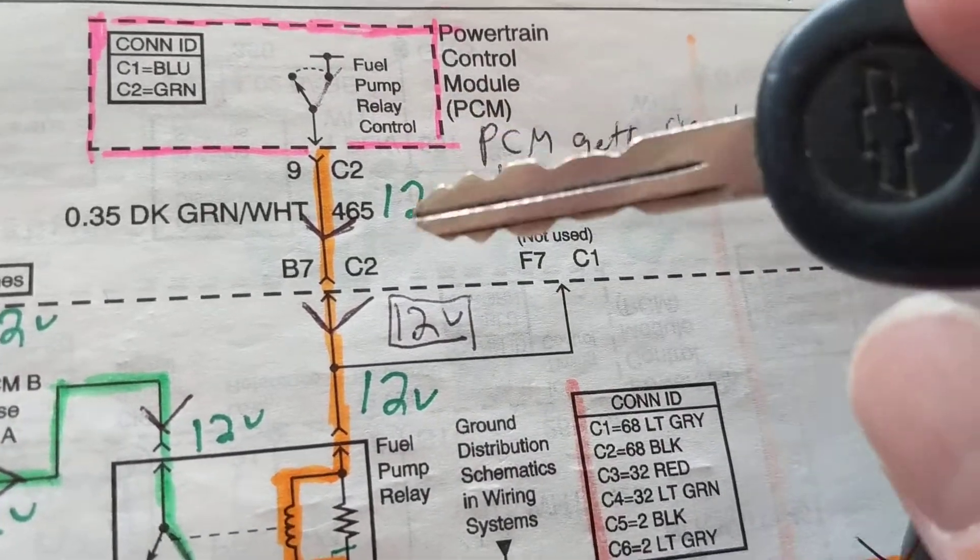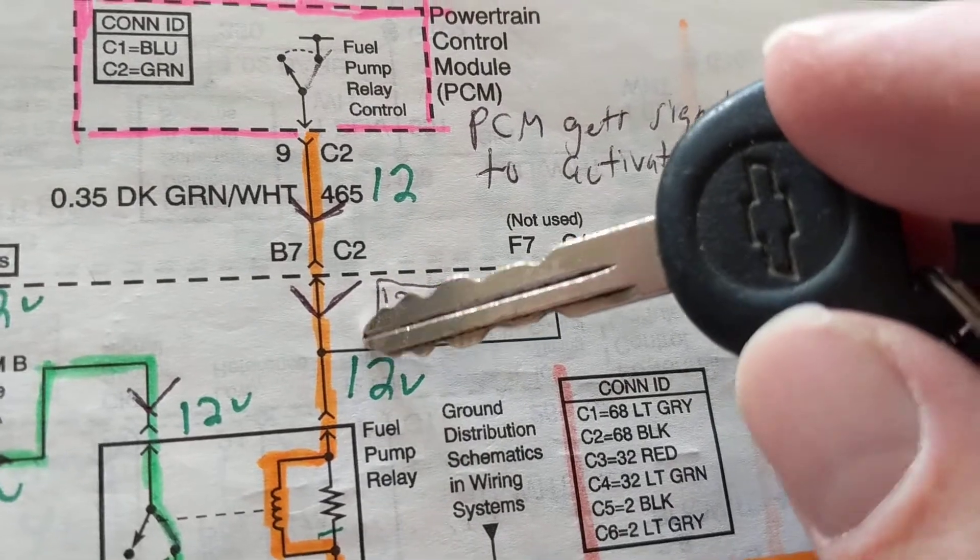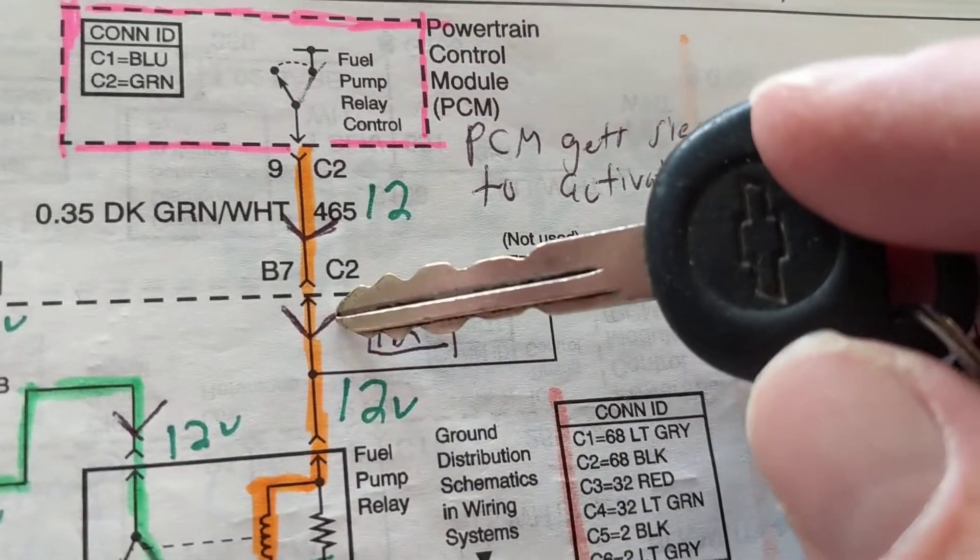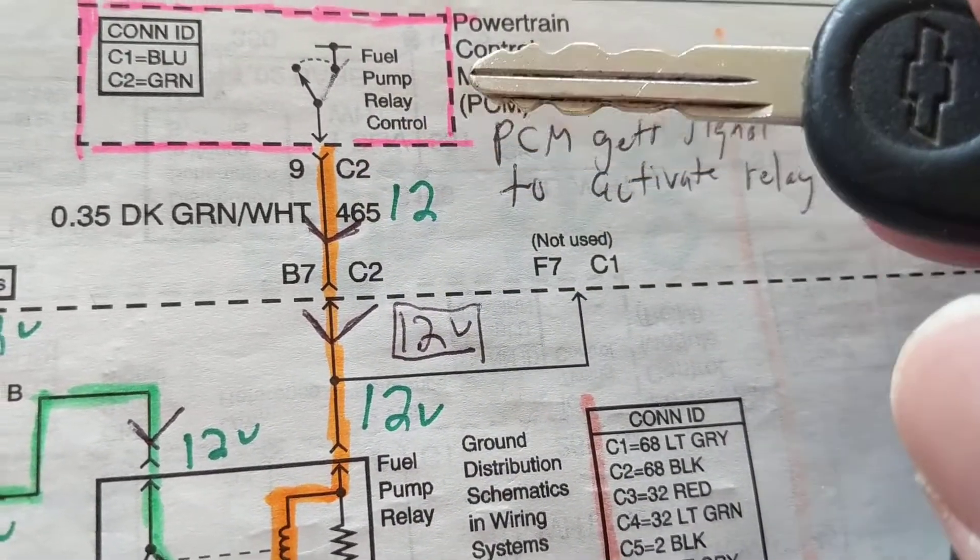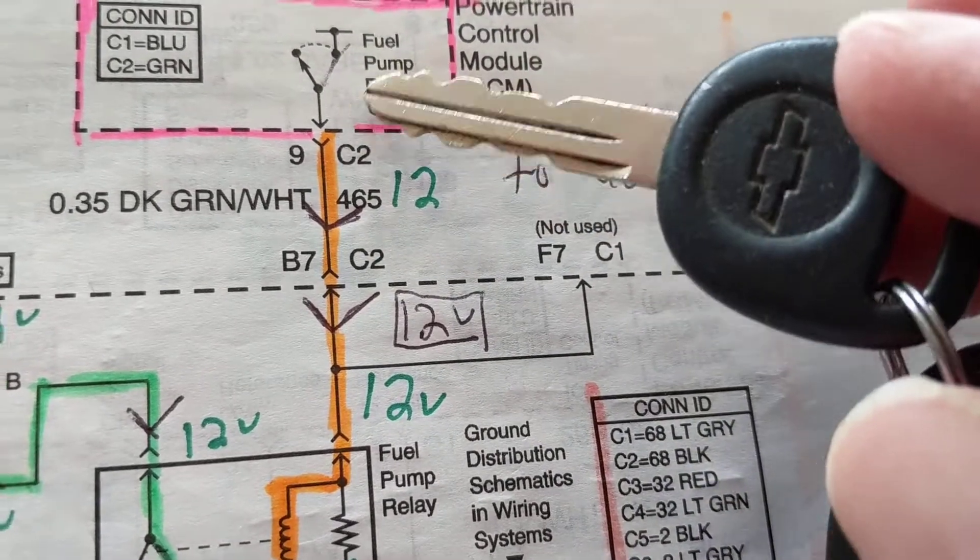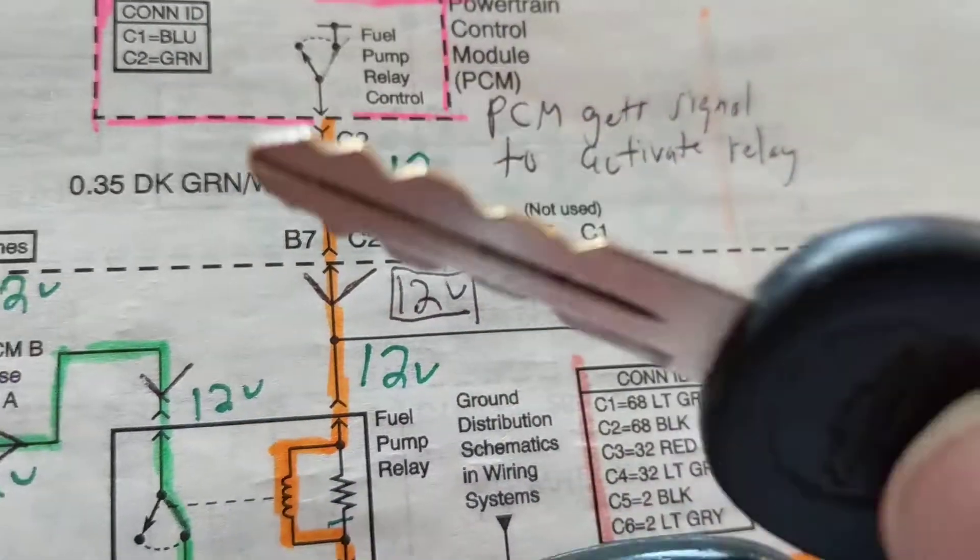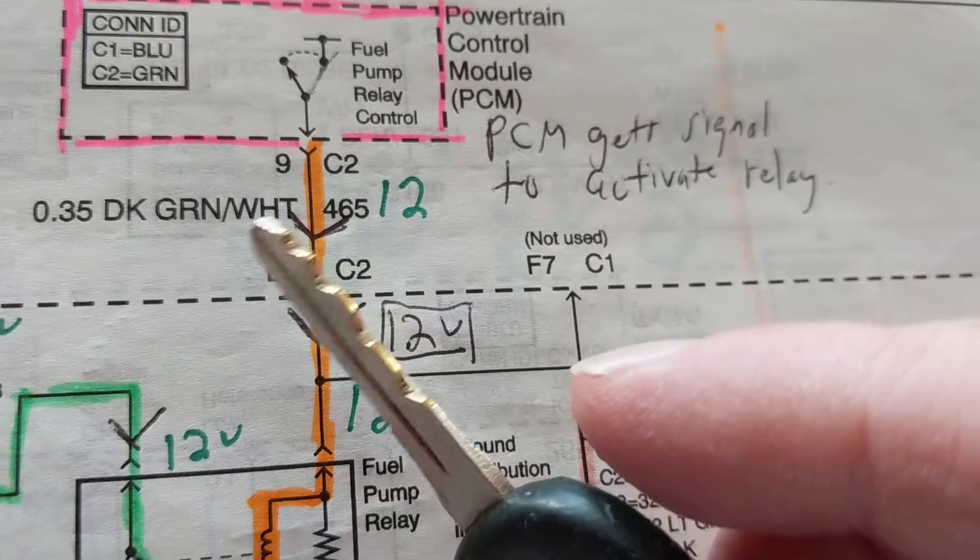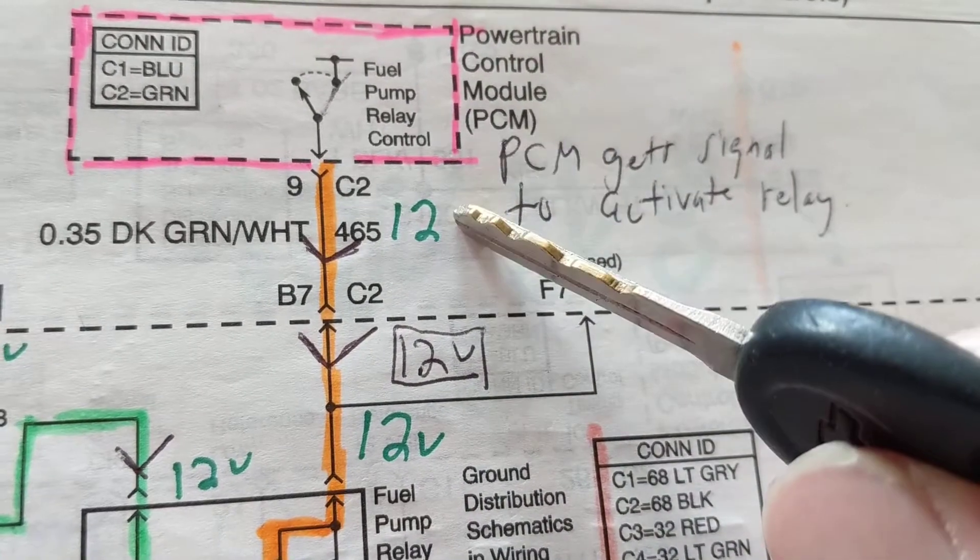So now what are we dealing with? We're dealing with a couple of things. Let's say this does not turn on. I come over here and I measure 12 volts at the relay at this point B7C2. Now I got a problem - this never turned on. Why? Is it the fault of the PCM? Is it the fault of the BCM? Is it the fault of the anti-theft system? Is it the fault of the key? Maybe there's something wrong with the key. Look how many variables we're dealing with.